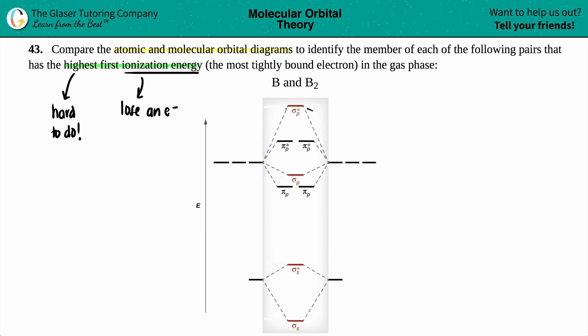So just keep that in mind when we're deciding between B and B2. But now we have to fill this diagram up. Now, just know that the lines, aka the orbitals that are flanking the sides of this junk over here, these are your atomic orbitals. So I have two atomic orbitals.